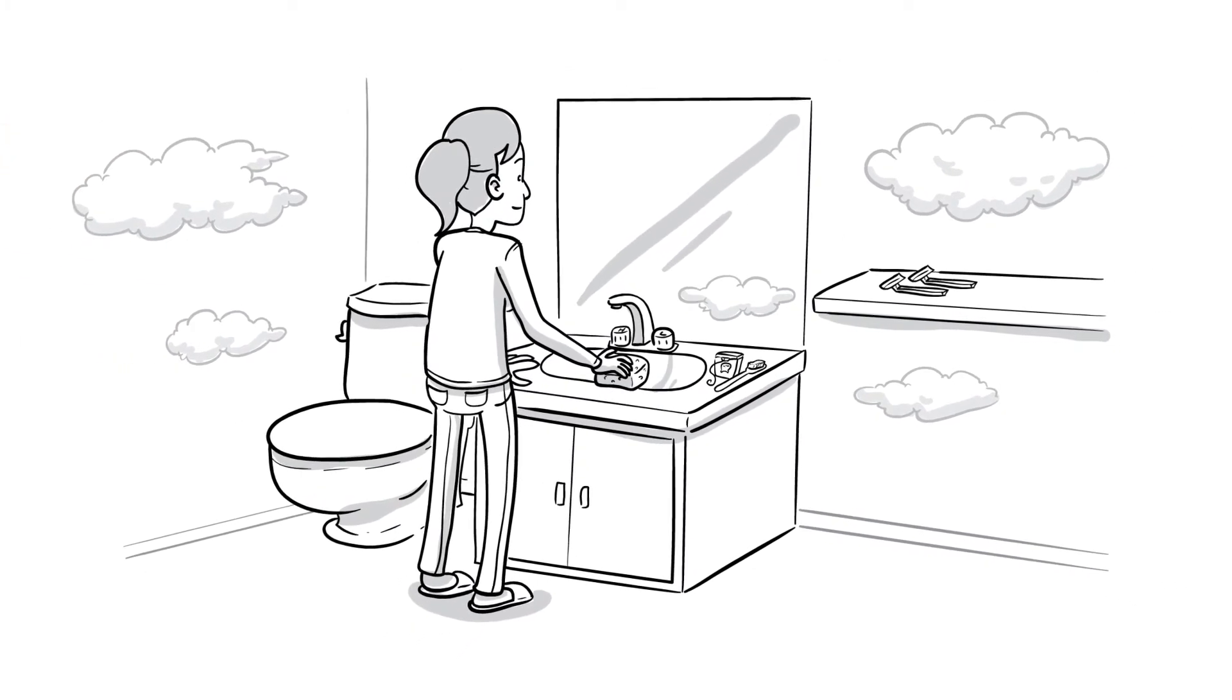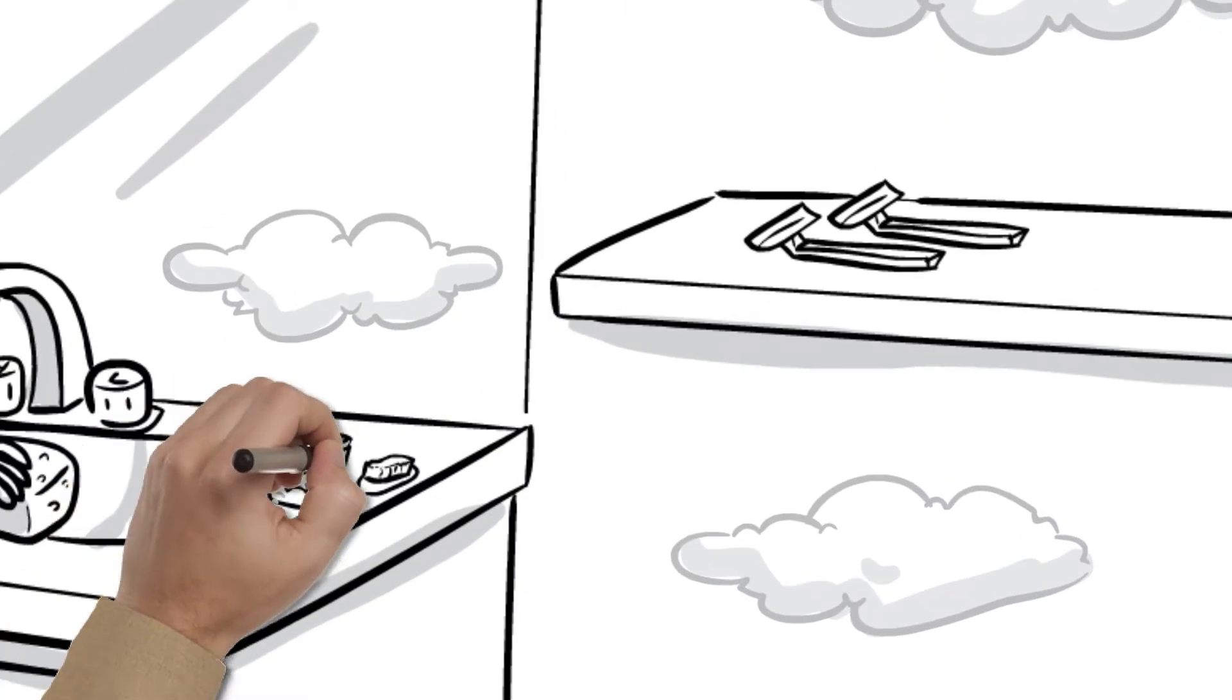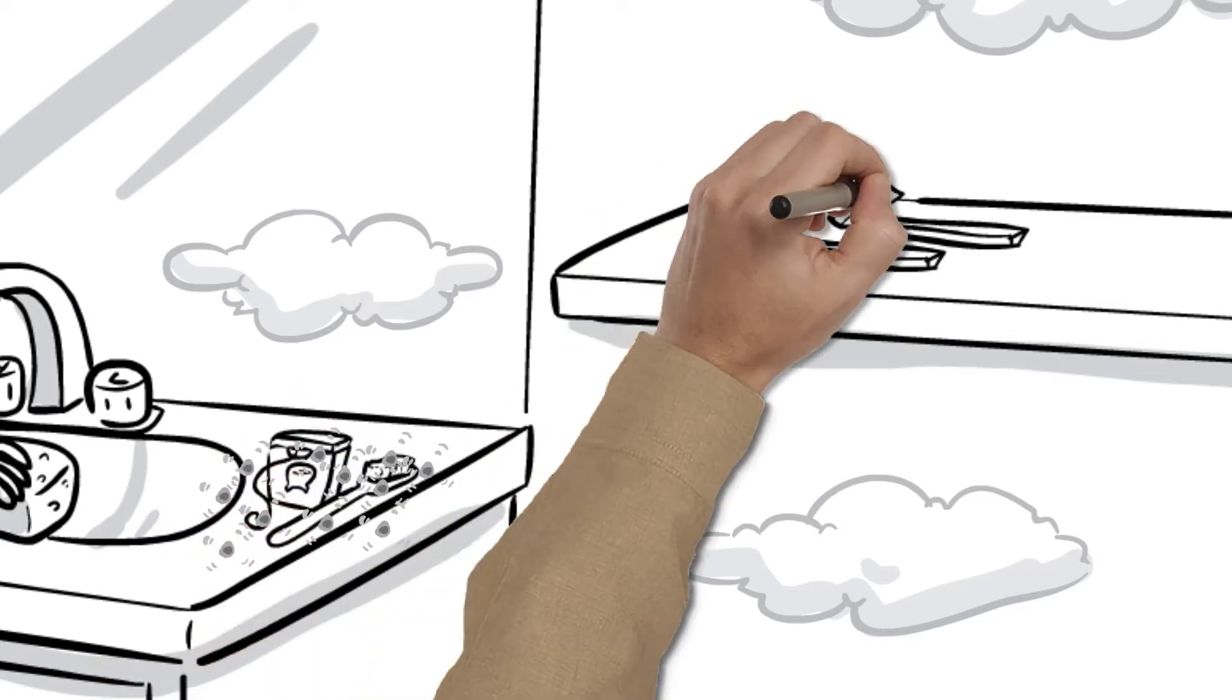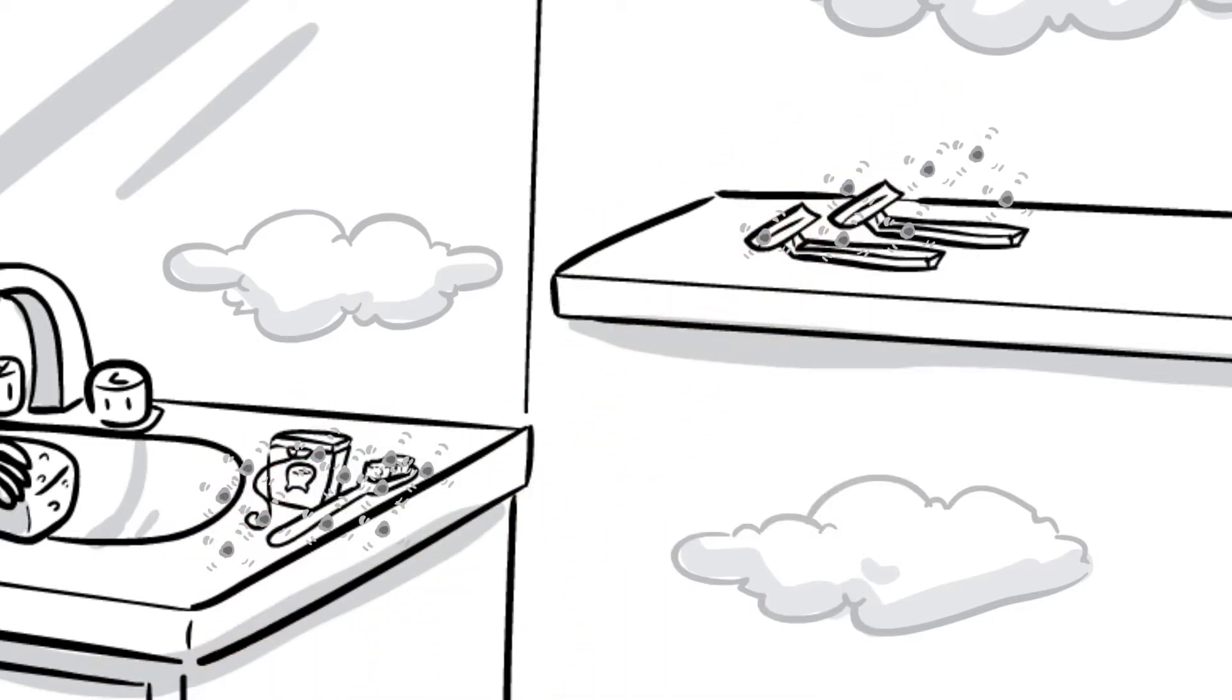Whenever we flush a toilet, the water vapor moves up to 18 feet, and this bacteria can remain alive for up to 90 minutes, putting her toothbrush, razor blade, and even her dental floss within reach of the bacteria.